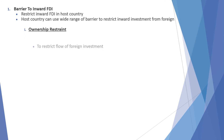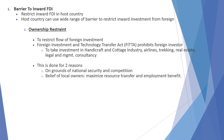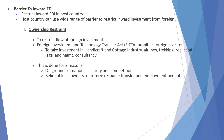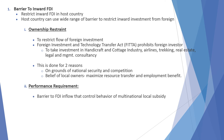Ownership restraint: to restrict the flow of foreign investment, the Foreign Investment and Technology Transfer Act (FITTA) prohibits foreign investors from investing in handicraft and cottage industries, airlines, tracking, real estate, and legal and management consultancy. This is done for two reasons: on the grounds of national security and competition, and the belief of local owners to maximize resource transfer and employment benefit. Next is performance requirement, which is a barrier to FDI flow that controls the behavior of multinationals.